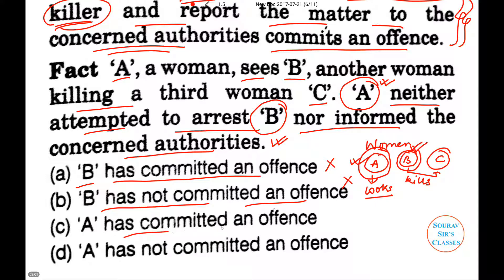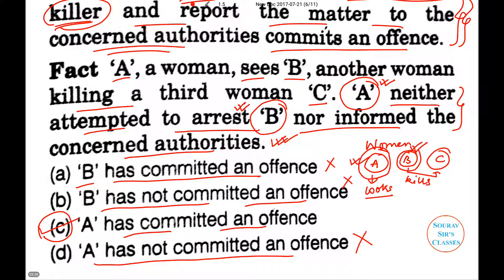A has committed an offense because A has neither attempted to arrest B nor informed the concerned authority. So A has not followed the principle and has definitely committed an offense. The last option — A has not committed an offense — is incorrect, because A has committed an offense by not informing the police or by not arresting B. So C will be the correct option.